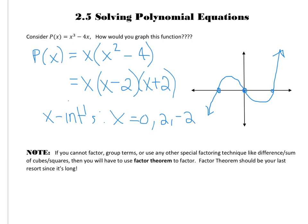Since we needed the x-intercepts, remember that that is actually the exact same thing as being asked to solve. The only difference is the question would say solve, and then it might say 0 equals x cubed minus 4x. We don't actually have to create the graph, but we would have to factor it, and then we would have to solve each binomial or each factor equal to 0, just like solving or being asked for the x-intercepts or the roots.